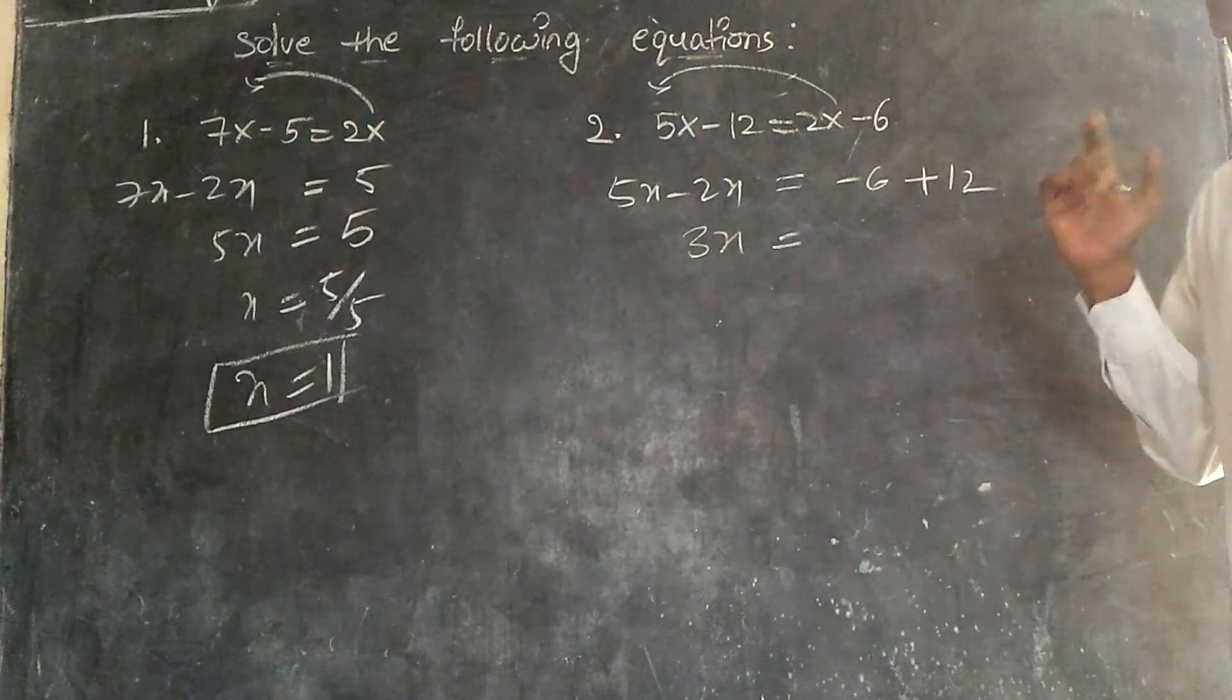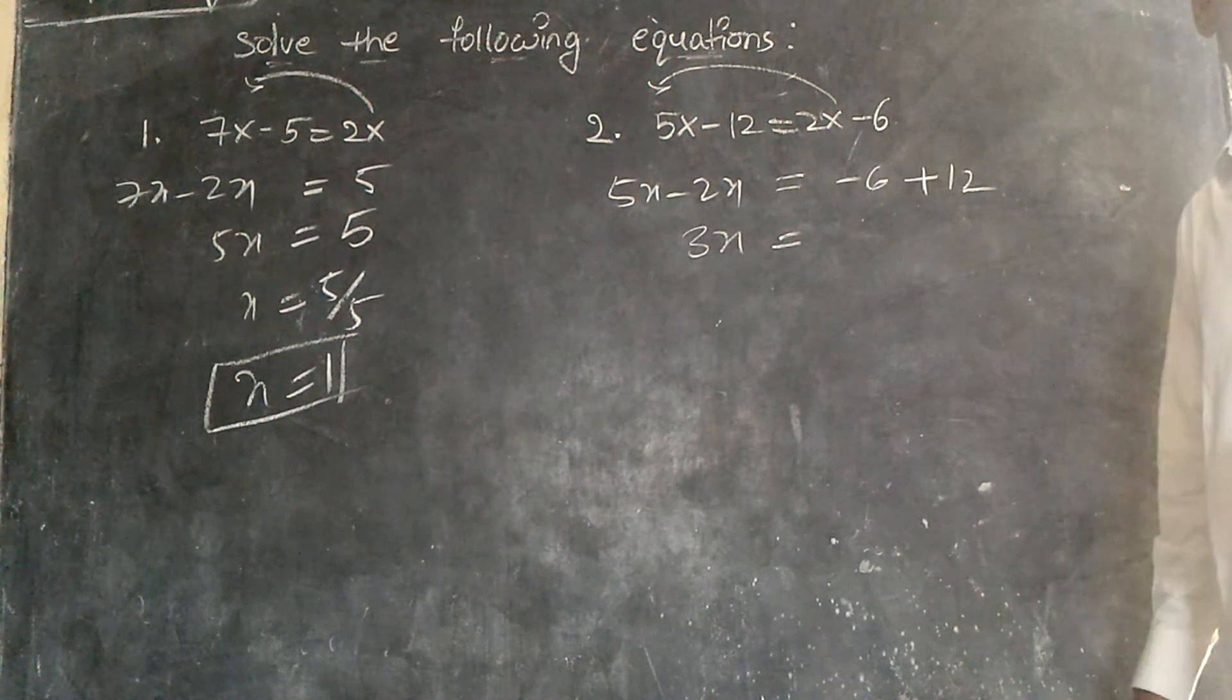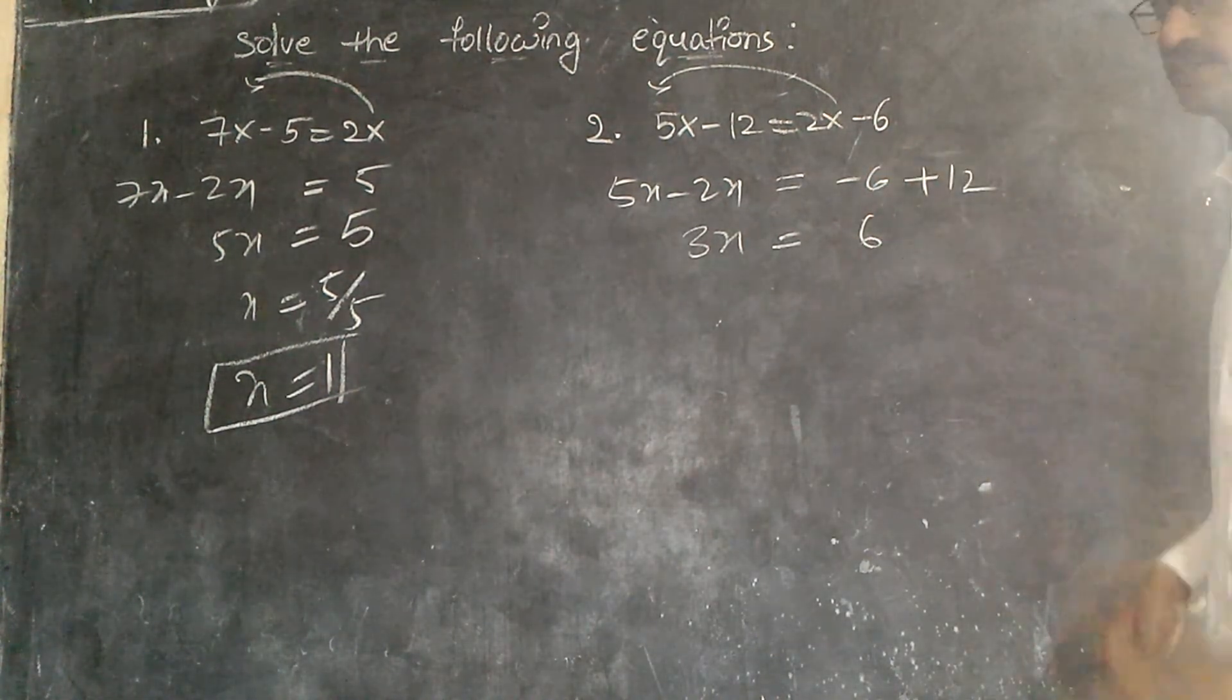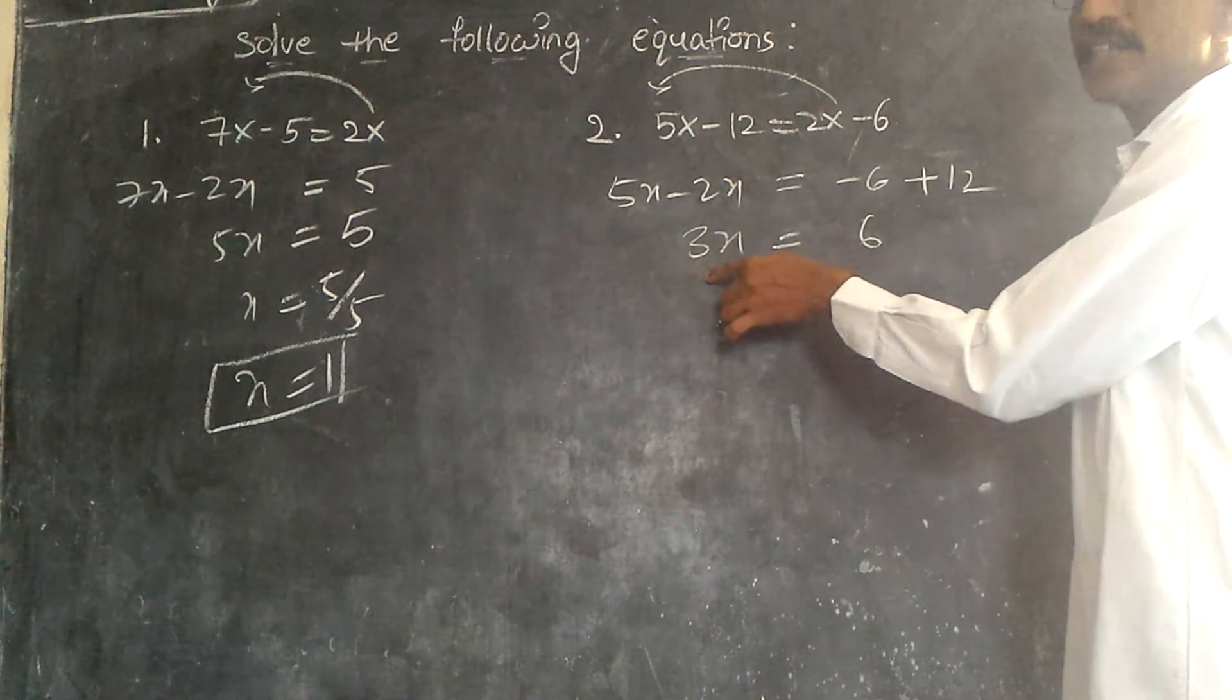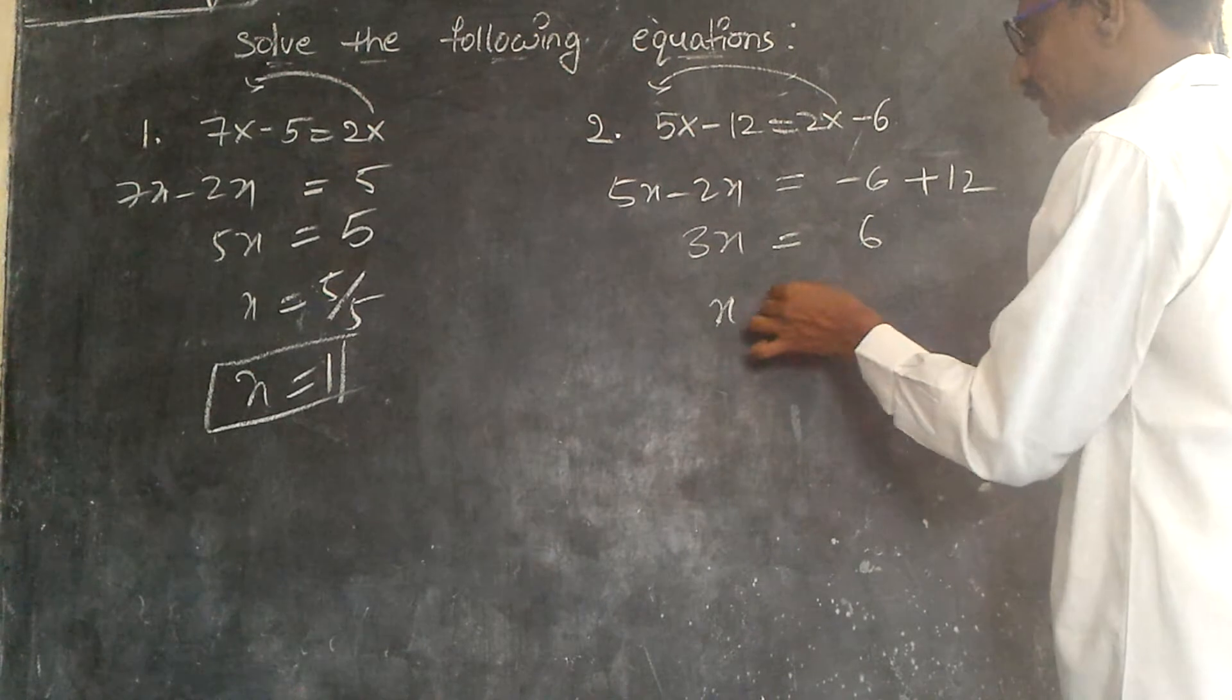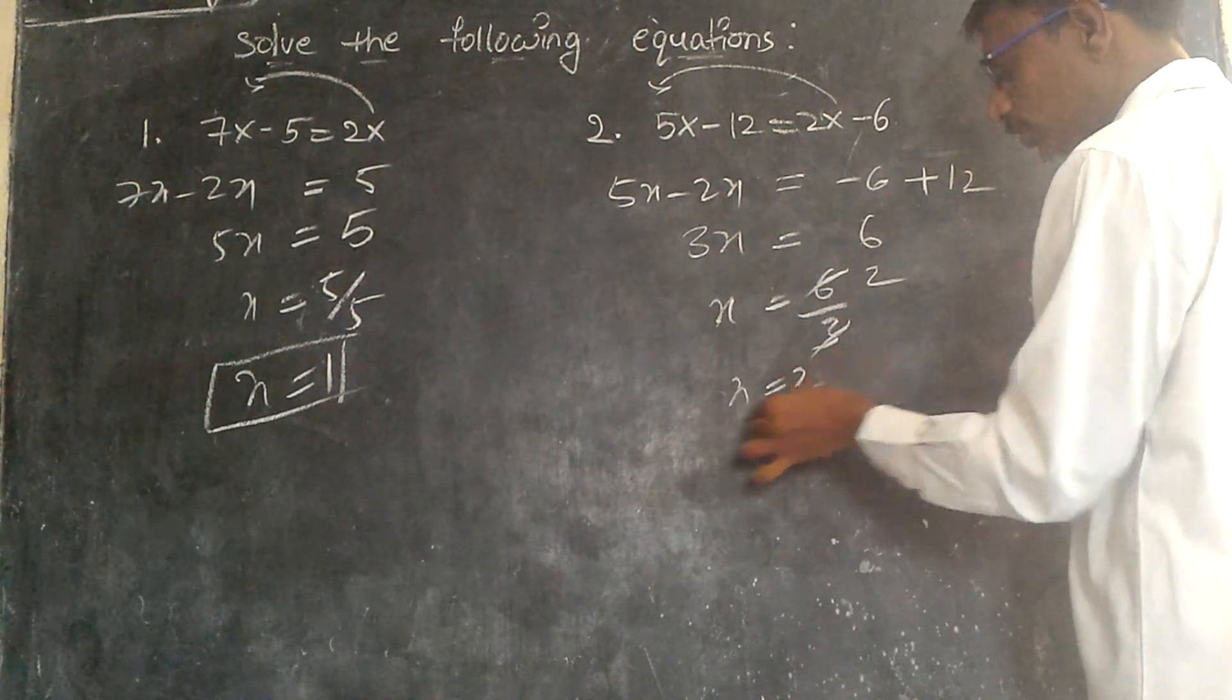3x is equal to plus and minus, what to do? Minus. 12 minus 6 is 6. Bigger symbol is plus, we can write plus. 3 times x, that means 3 into x, will go this side divide. So x is equal to 6 by 3. How many times? 2. So x is equal to 2.